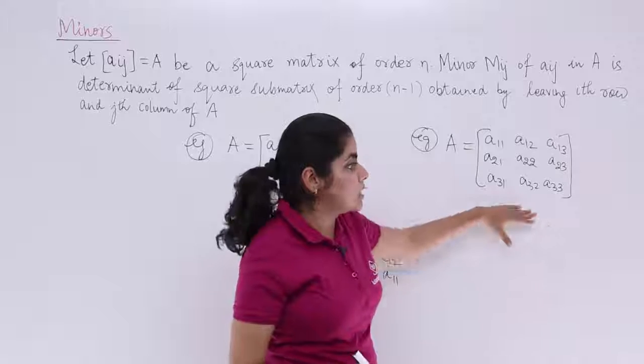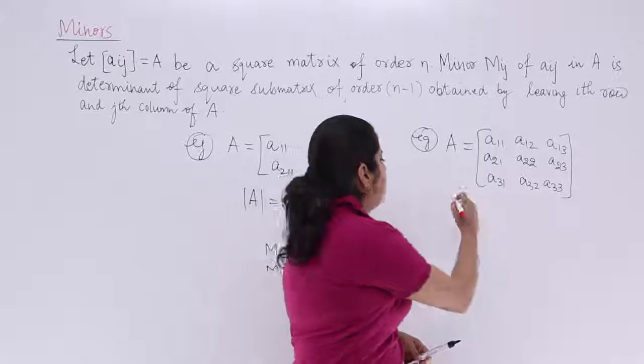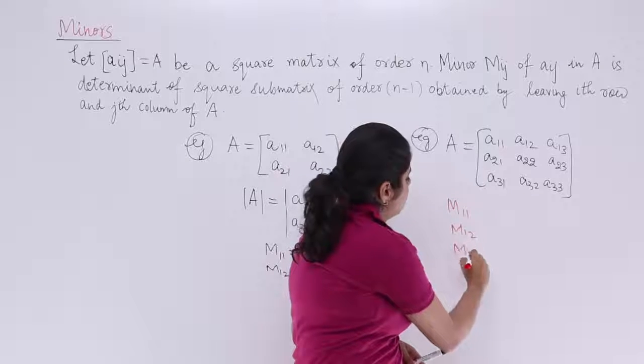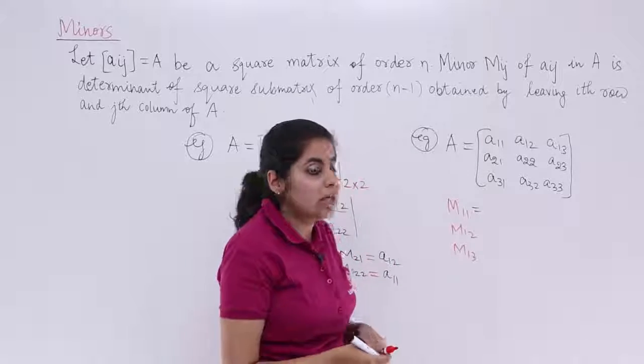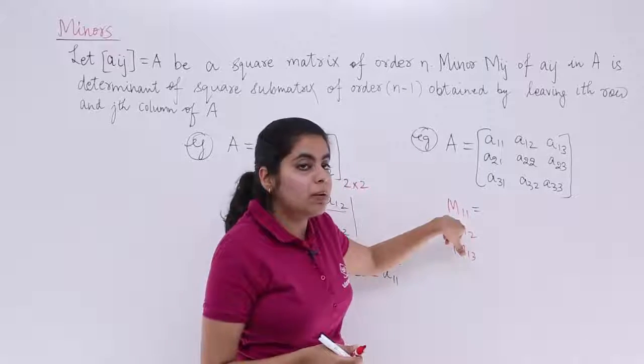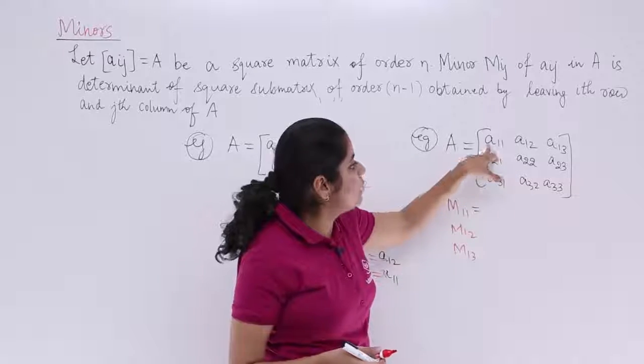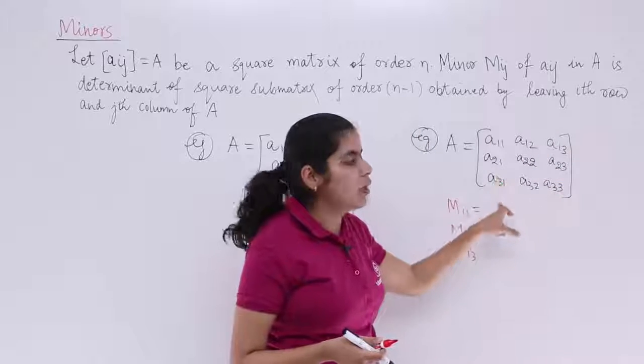For this matrix, all the 9 elements, we have to compute the minors. So let's start with M11, M12 and M13. M11 would be what? It would be minor when you compute for A11. And how will you compute it? You will leave the corresponding row and you will leave the corresponding column.